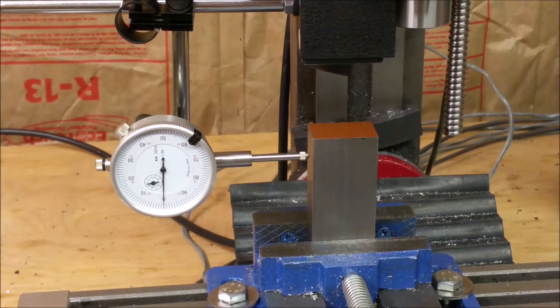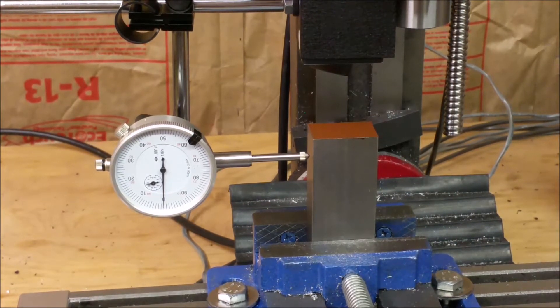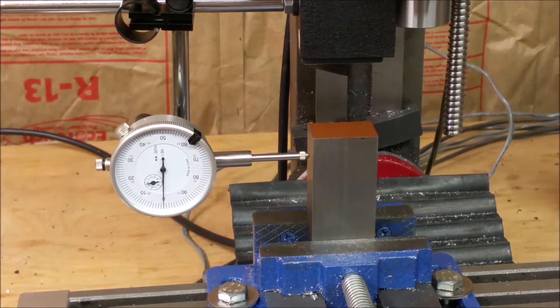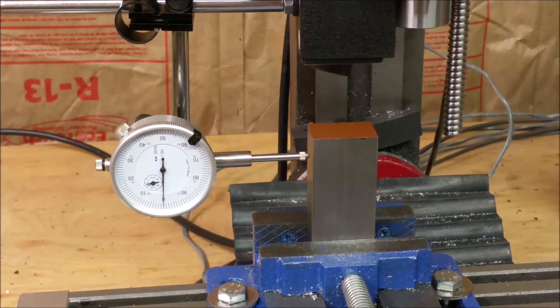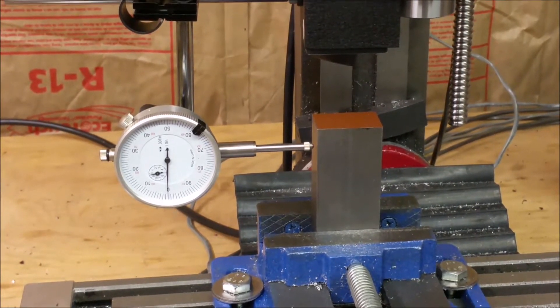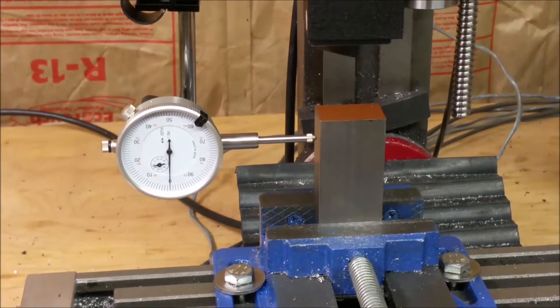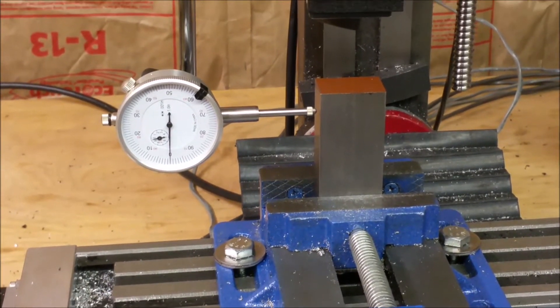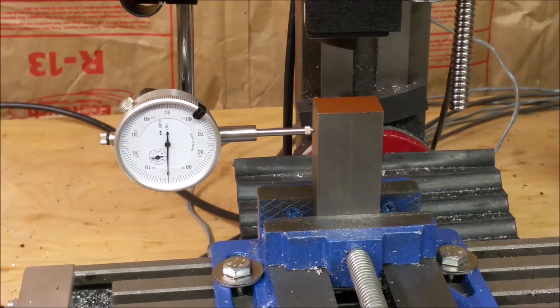Okay, so the next thing I'm going to do is set steps per unit. I'm going to start with the x-axis. I'd probably be better off using one, two, three blocks attached right to the bed, but this is what I have now.